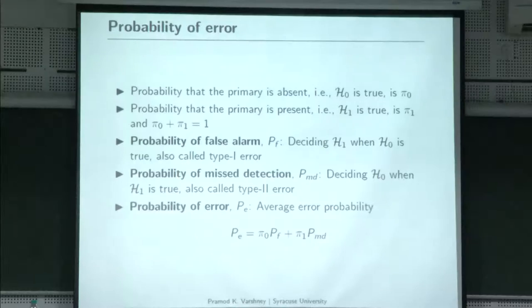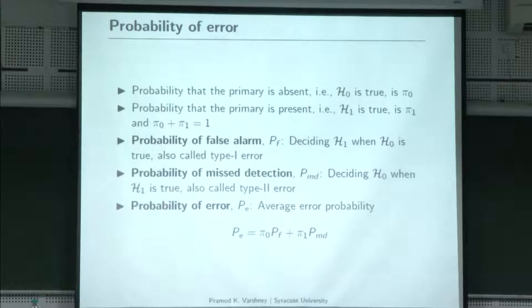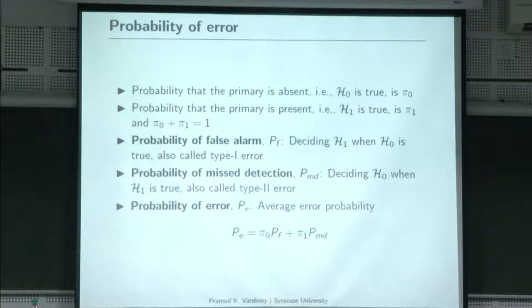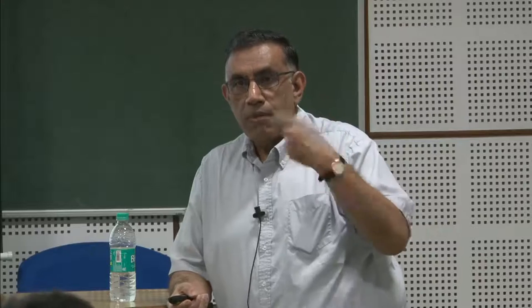Probability of error will be defined formally, and there are many formulations for the detection problem. In one formulation we need to know prior probabilities: the probability that the primary is absent is pi_0, and the probability that the primary is present is pi_1. These are prior probabilities. If you know them, then we use a Bayesian formulation for the detection problem, which we will cover tomorrow.